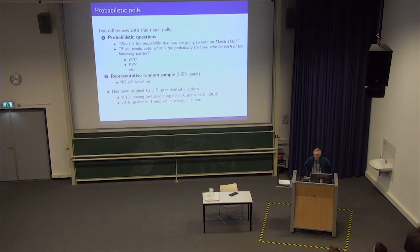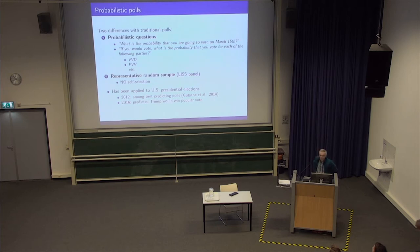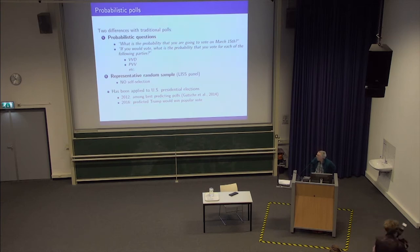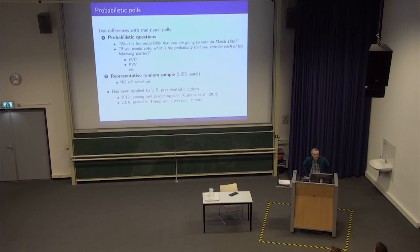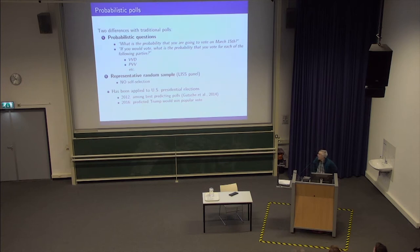We don't ask 'for which party do you intend to vote?' Instead, we ask 'what is the probability that you will vote for party A, party B, party C?' and hopefully the probabilities add up to 100% — in fact they have to, otherwise people get stuck in the questionnaire. This means we take account of the fact that people don't really know yet what they are going to vote; many people give numbers in between zero and 100, which allows us to handle uncertainty in a precise way.